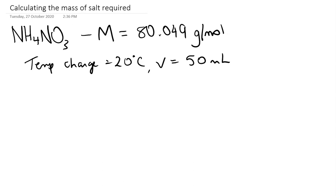What we're going to do is use this equation: delta H equals 4.18 times change in temperature times the volume over 1,000 times n. This is the equation that we use if we wanted to calculate the enthalpy.